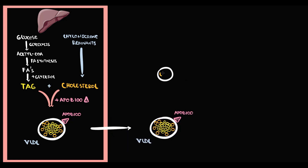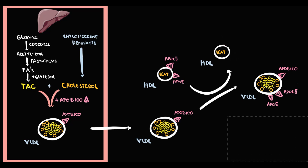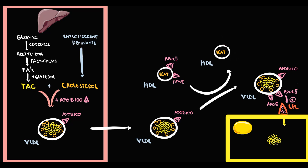In the blood, VLDL meets HDL, and HDL gives VLDL two additional apoproteins: ApoC2 and ApoE. When VLDL comes to an adipocyte, lipoprotein lipase is located on the surface of the adipocyte. ApoC2 on the VLDL surface activates lipoprotein lipase, and with activation, lipoprotein lipase pumps triacylglycerols from VLDL into the adipose tissue, where they are stored inside lipid droplets. When enough triacylglycerols are delivered to the adipocyte, VLDL detaches.